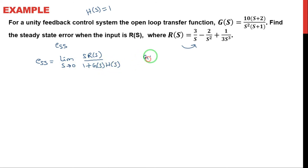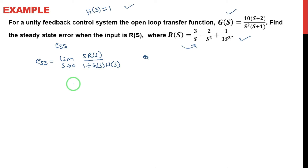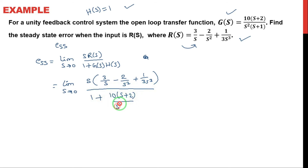Now write down the given data. G(s) and R(s) are coded in the S-domain. In case the input signal is given in the time domain, we have to convert it into the S-domain using the Laplace transformation. Now applying the formula: limit S tends to 0 of S into R(s) — which is 3/s minus 2/s² plus 1/(3s³) — divided by 1 plus G(s)H(s), where G(s) is 10(s+2) divided by s²(s+1) and H(s) is 1.